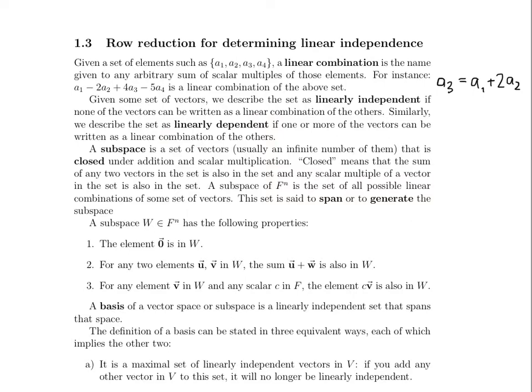Our next big term is subspace. A subspace is a set of vectors — usually an infinite number of vectors — that is closed under addition and scalar multiplication. Closed under addition means that if I take any two vectors in the set and add them together, their sum is also in the set. Closed under scalar multiplication means that if I take any vector in the set and any scalar multiple of it, that scalar multiple is also in the set. A subspace of F^n is the set of all possible linear combinations of some set of vectors — that's a subspace.